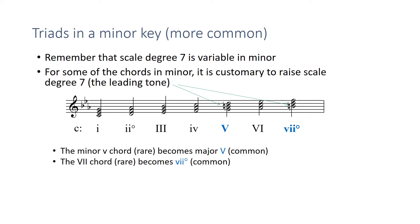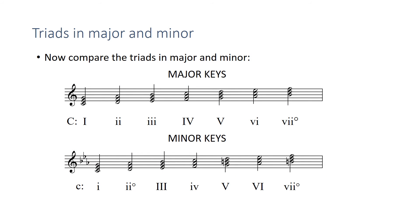So remember those two differences there. And these are the Roman numerals that I would have you remember for minor keys, because these are the types of chords that are most typical for minor keys. Okay, so make a note of that. And again, don't raise the leading tone for the three chord. That would make it augmented, and that's generally not a very useful chord.